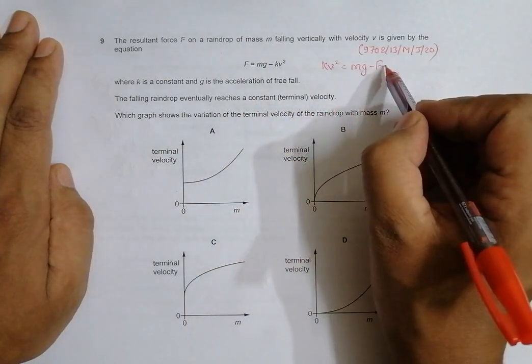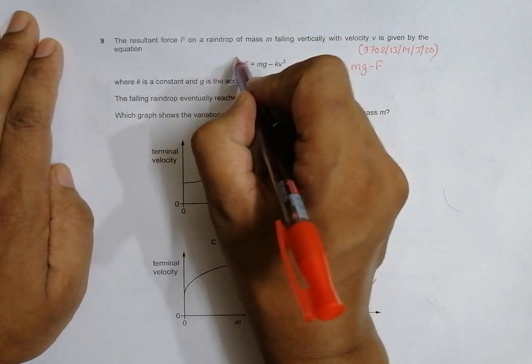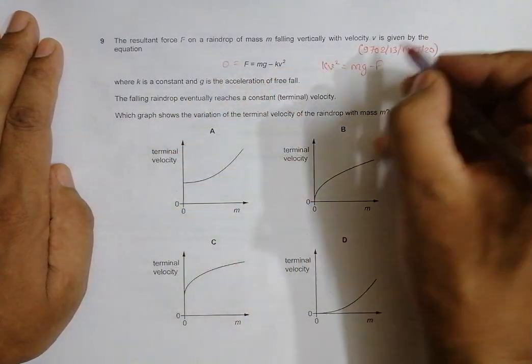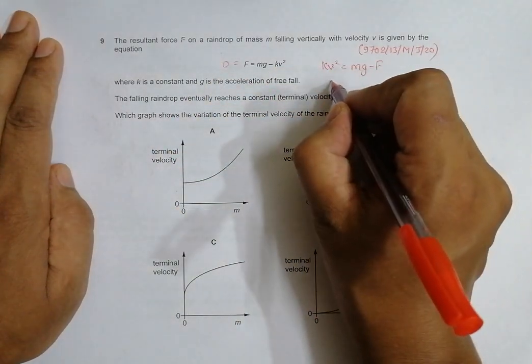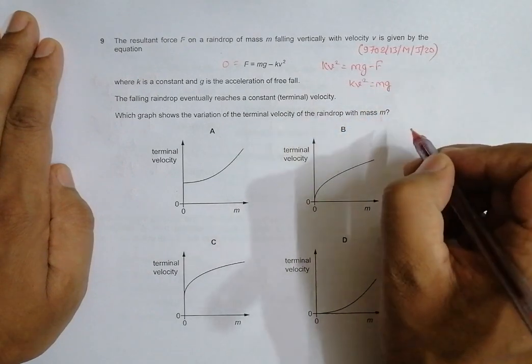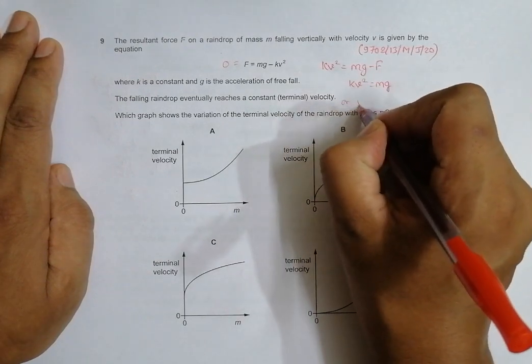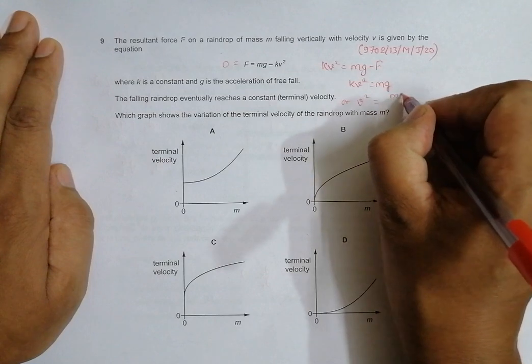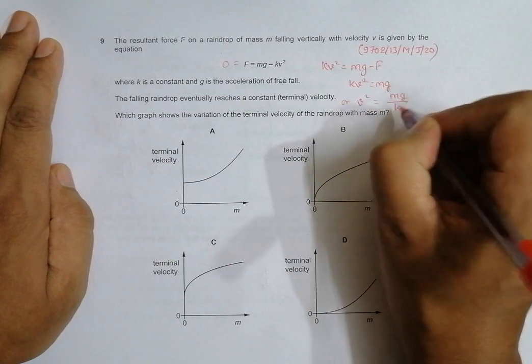When it reaches terminal velocity, the resultant force should be zero. So what remains is kV squared equals simply mg. This gives us V squared equals mg divided by k.